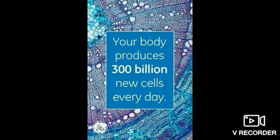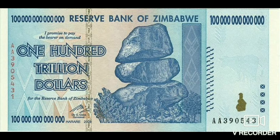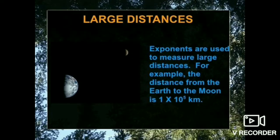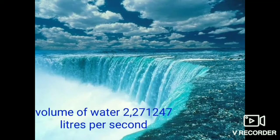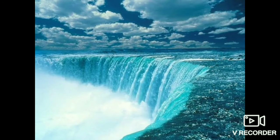Our body produces 300 billion new cells every day, and people are comprised of 100 trillion cells. The currency of Zimbabwe is 100 trillion dollars. The distance between the moon and the earth is 1 × 10⁵ kilometers. Niagara Falls produces 2,271,247 liters of water per second — again, a large quantity.